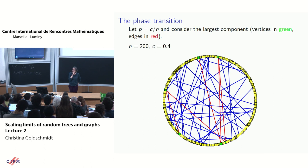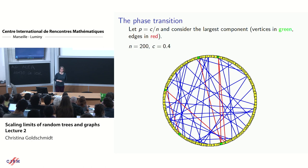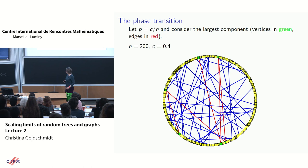This model undergoes a phase transition. Let me take the edge probability p = c/n where c is a constant. This is sensible because every vertex has n−1 possible neighbors each present with probability p, giving an order-one number of neighbors — the sparse regime. With p = c/n, we look at the largest component, highlighted in green with red edges, for n = 200.